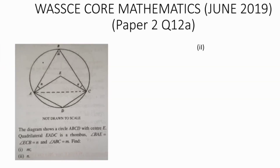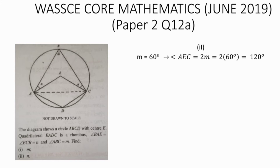Part ii asks us to calculate the value of the angle marked n. Since we have already calculated the value of m as 60 degrees, and angle AEC equals 2m, we substitute m equals 60 degrees, giving us angle AEC equal to 120 degrees.